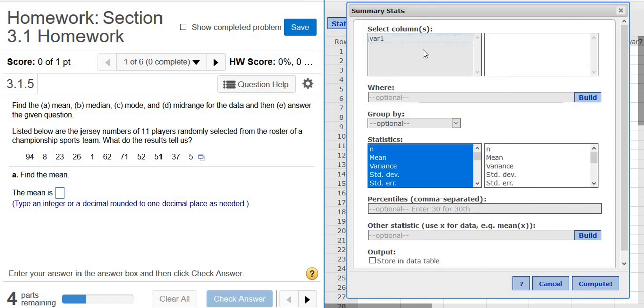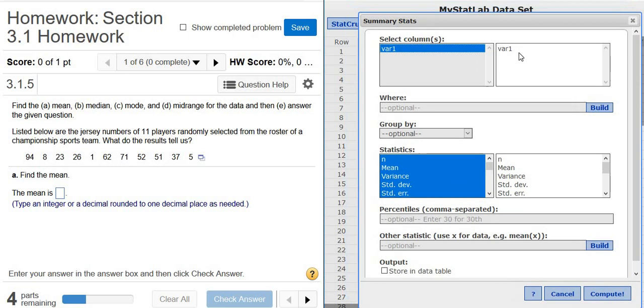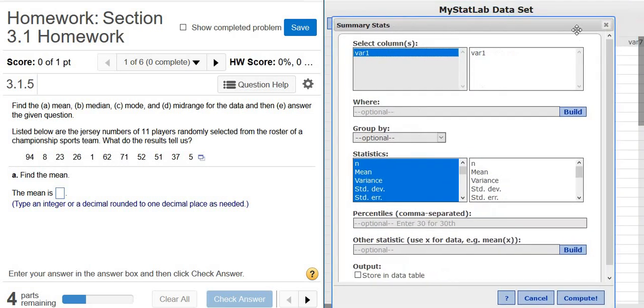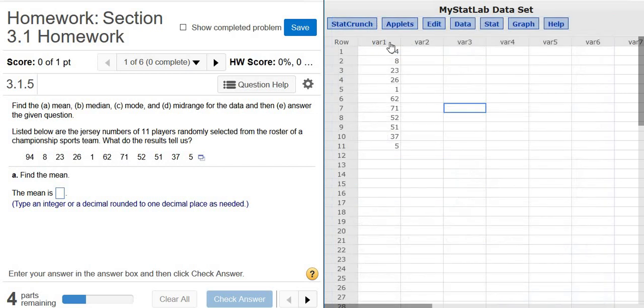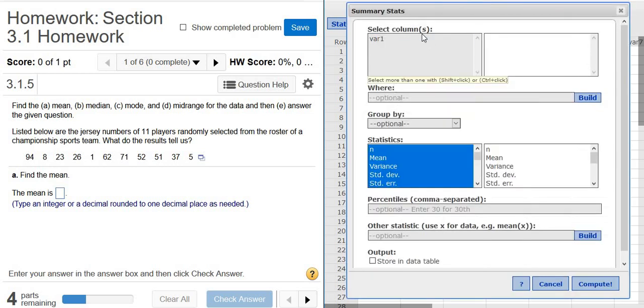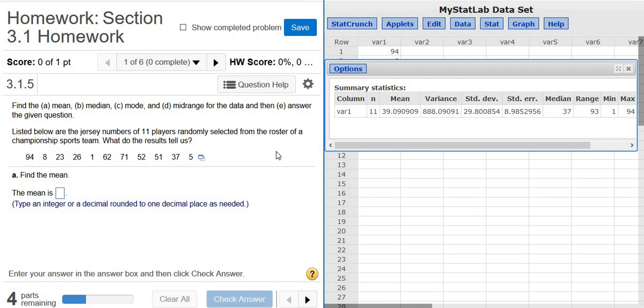I'm going to left click. Then here you can click on VAR1, and then just click Compute. When you click on VAR1, what you're doing is you're selecting the data. Let me close this and show you. The data here is in column VAR1, so Stat, Summary Stats, Columns. Click on VAR1, and then just click Compute. It gives you a bunch of answers.